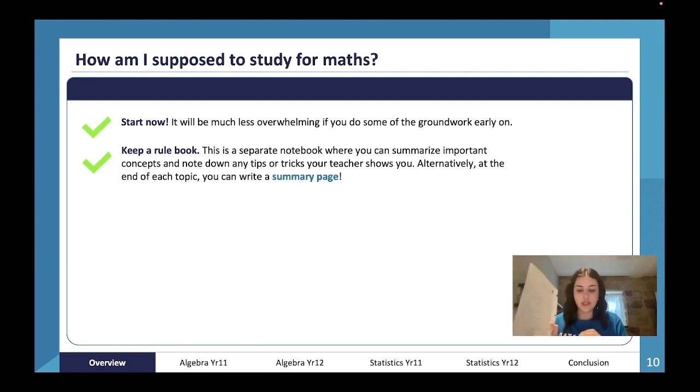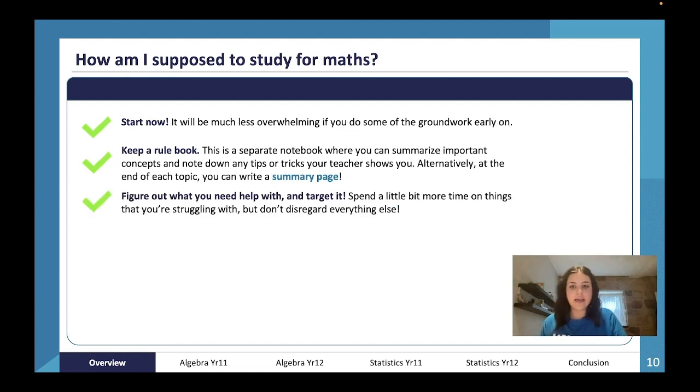The next thing that I would say is to make sure that you figure out what you need help with and target it. So you need to make sure that you spend time on things that you're struggling with, but don't disregard everything else. Now this means that if you get an exam back and you lose a certain amount of marks in a certain section, you need to make sure that that section...